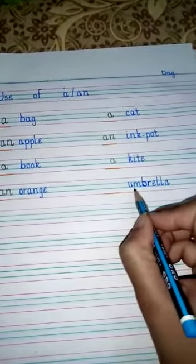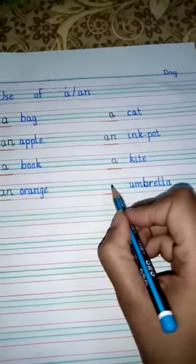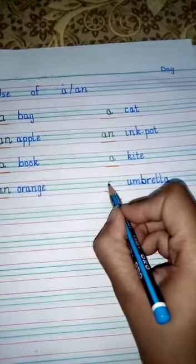Umbrella: U is our vowel so we will write 'an'. An umbrella.